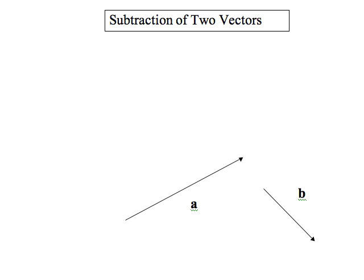Subtraction of two vectors. There are two ways to do subtraction of vectors. Here we're going to have this vector A and vector B. I'm going to subtract them.